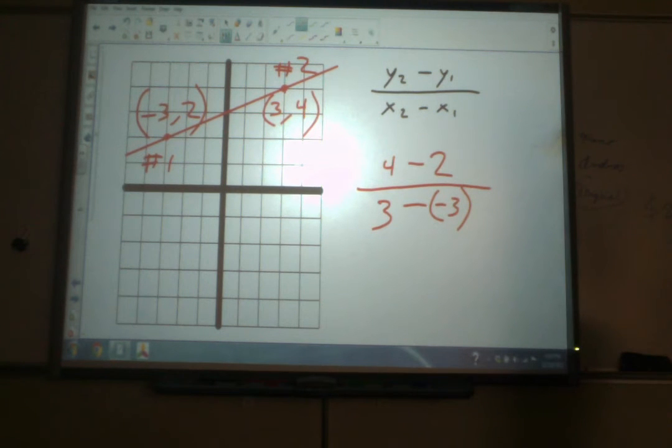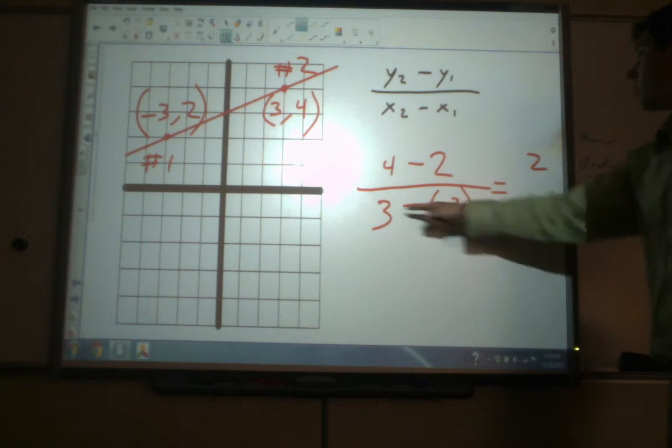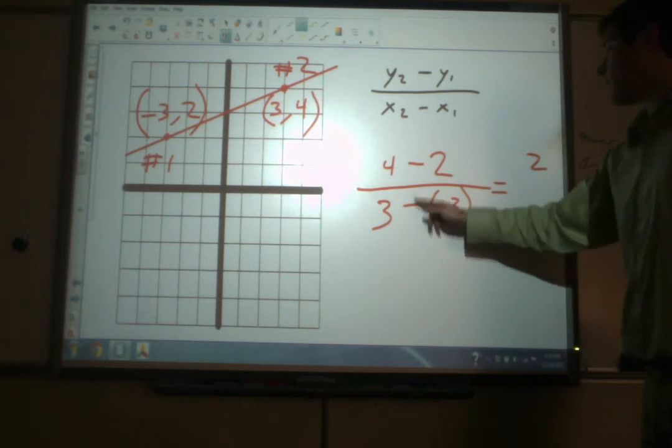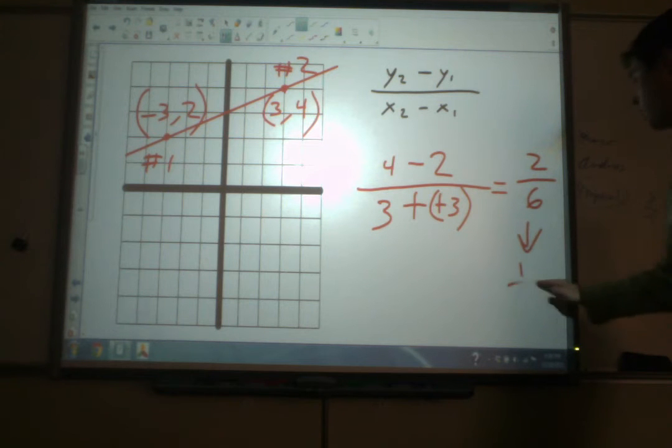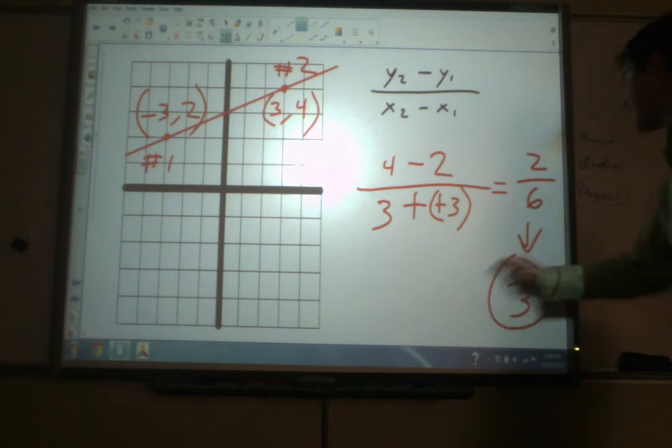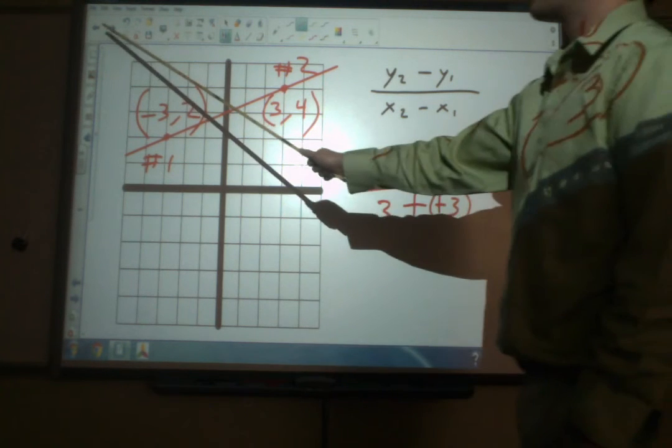So now we've set up our formula. Now we just have to go ahead and subtract. 4 minus 2 is 2. 3 minus negative 3, we have to add the opposite, and we get 6. And finally, 2 sixths, we can simplify down to 1 third. And that is the slope of this line. 1 third is the slope. Positive 1 third.